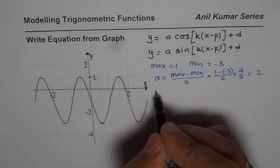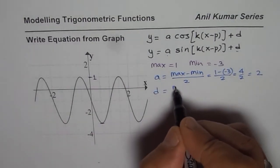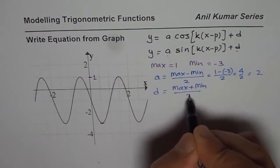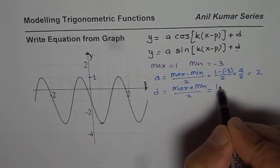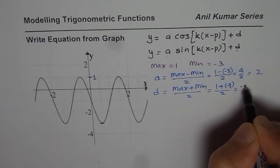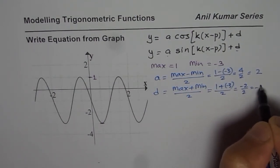As far as d is concerned, it is the average value. Average you take by adding them up and then dividing by 2. So we just add them and then divide by 2, which is minus 2 over 2, which is minus 1.